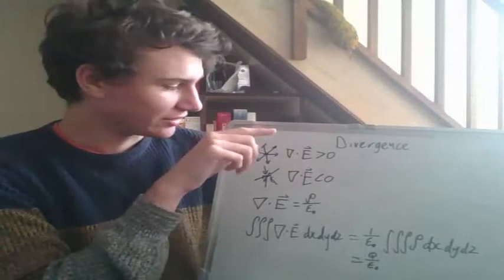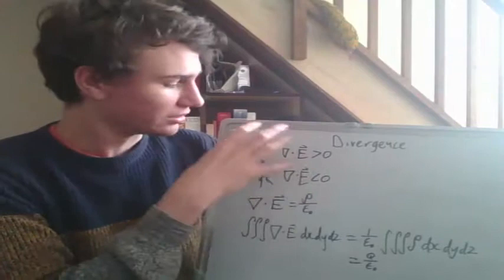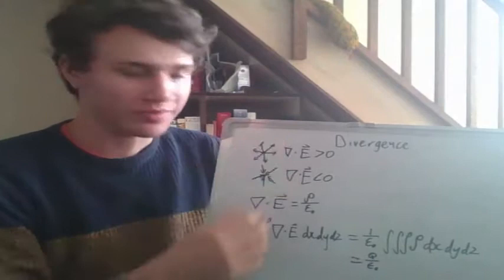the divergence of the electric field, this is the notation, it's just a delta on its head with a dot product with the electric field, it's going to be positive since it's going away. So it has positive divergence, the lines basically diverge from that point.